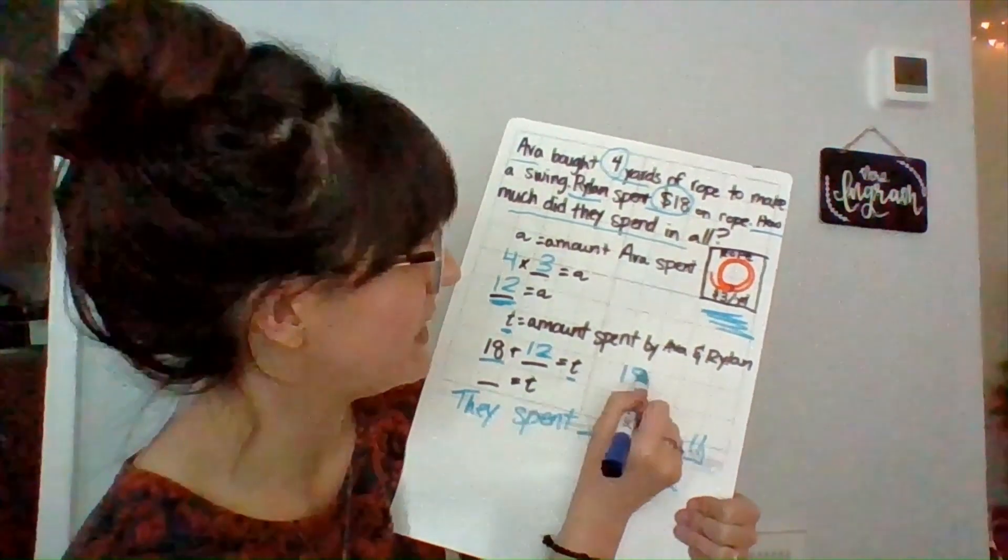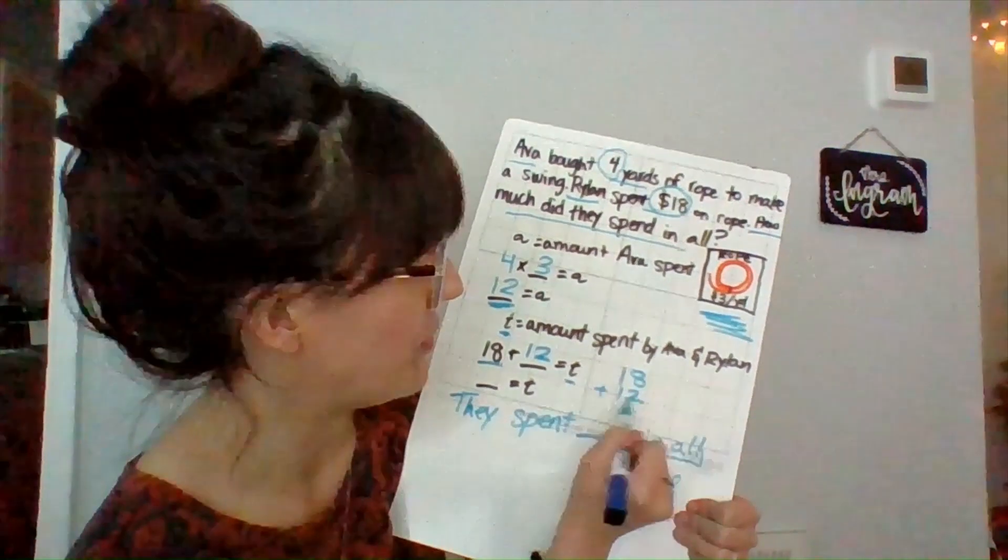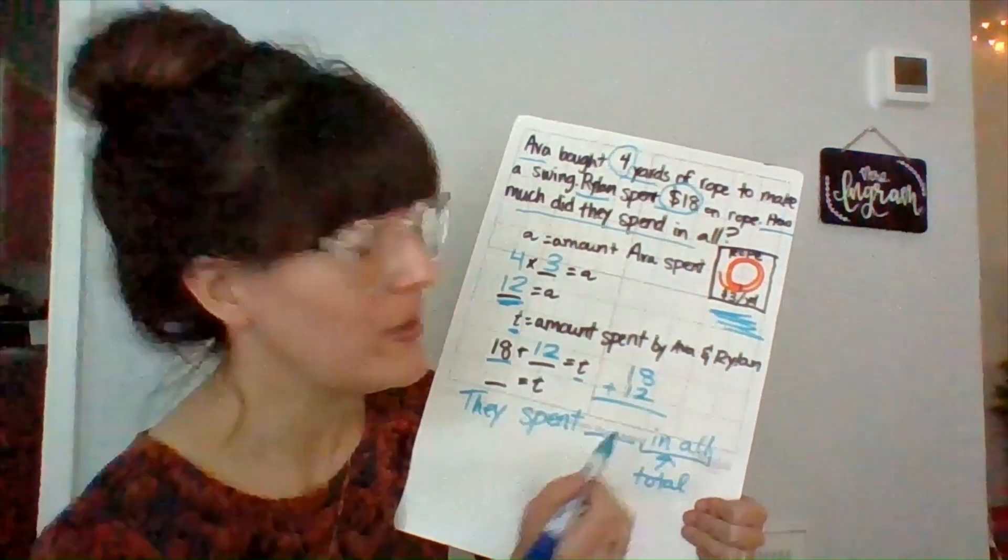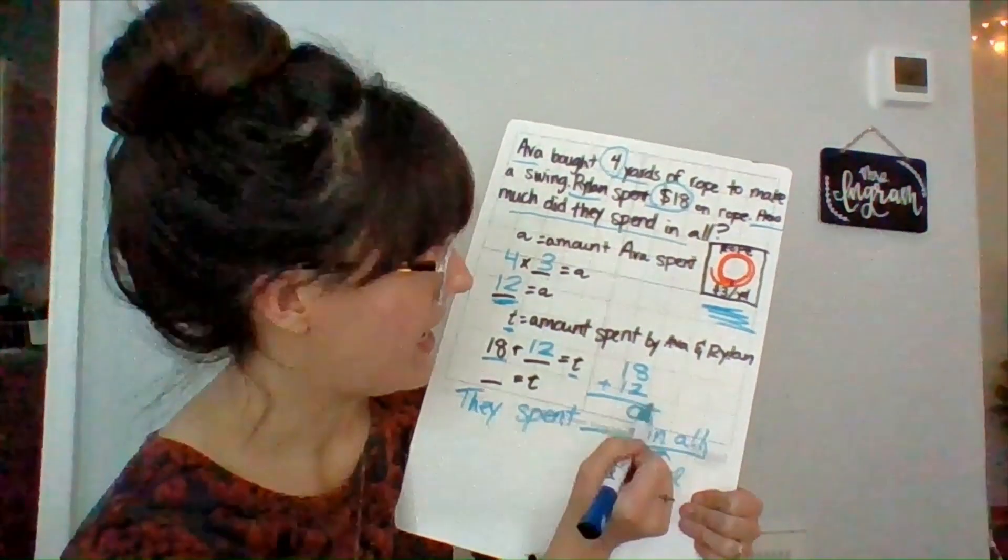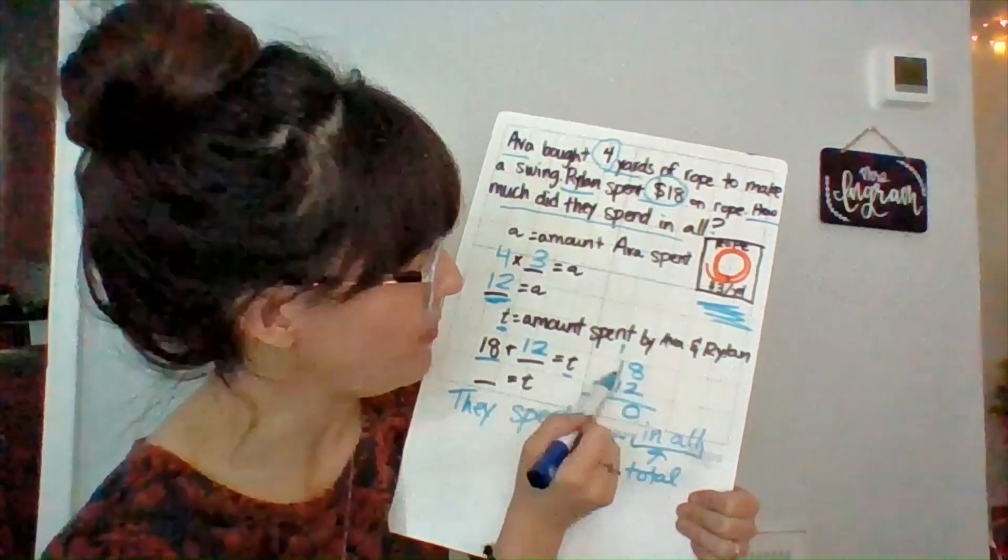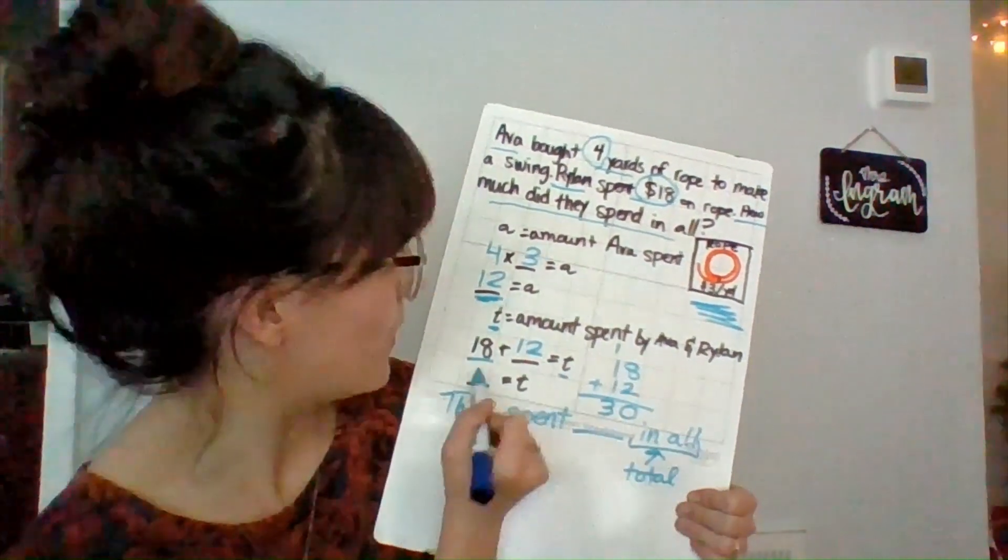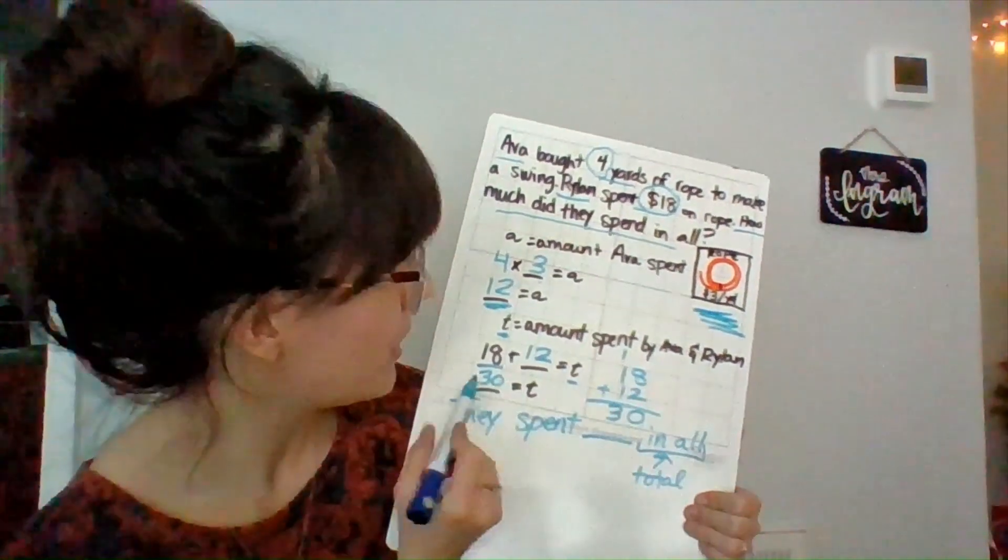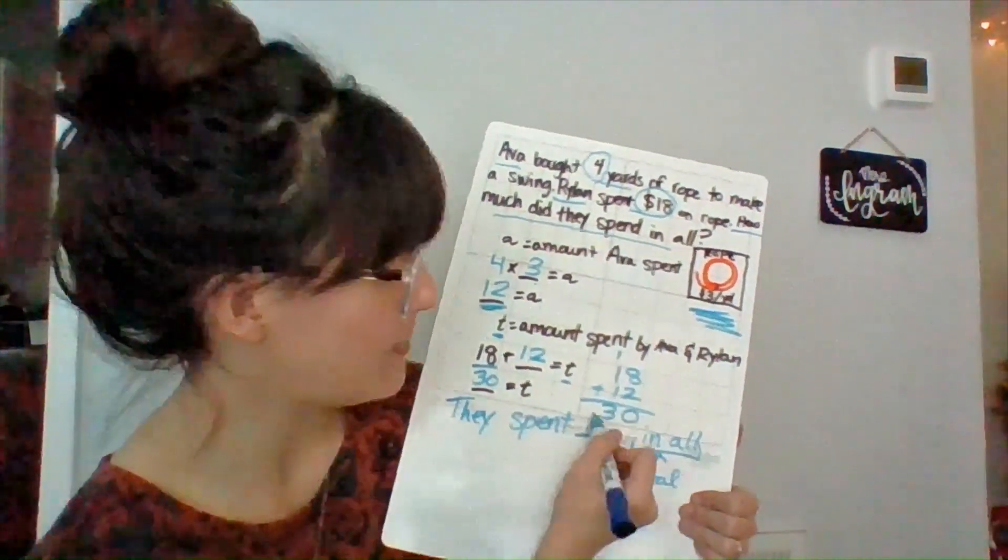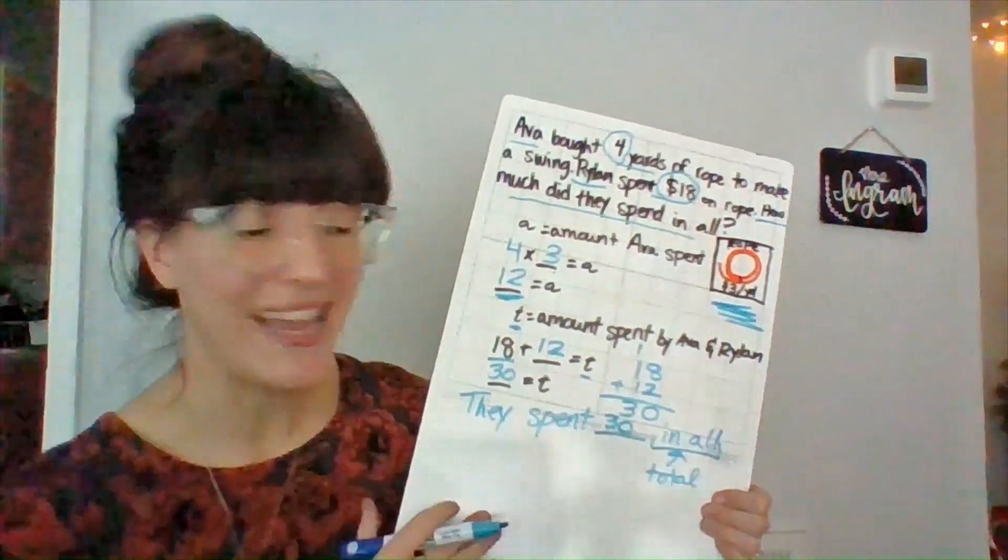So I've got 18 plus 12. Eight plus two, eight, nine, ten. I carry my one, and then one plus one plus one equals three. So I know their total was $30. So they spent $30 in all.